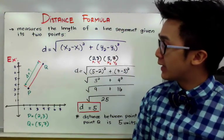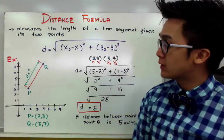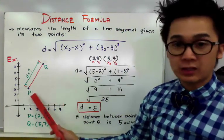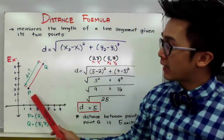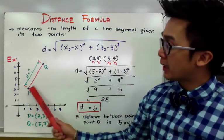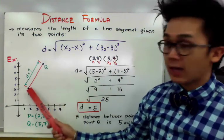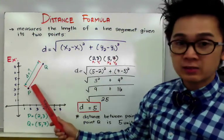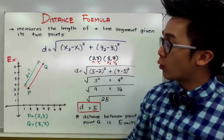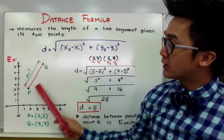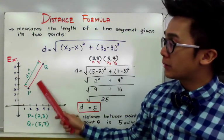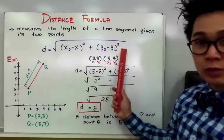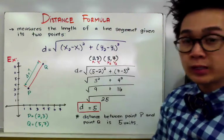For our example, let's say we have points P and Q given by this graph right here. If we connect point P and point Q, it will create a line segment. Our task today is to find the length or the distance between point P and point Q using the distance formula.